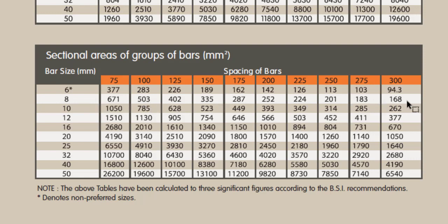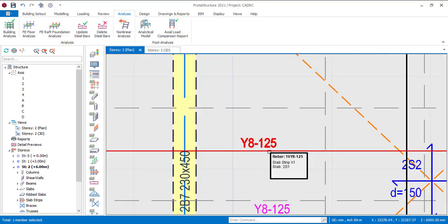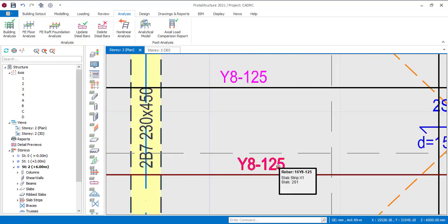That means if I am using Y8, the spacing I'm expecting it to provide is 125 mm. So it should be providing Y8 at 125 mm spacing. If it provides this, it is accurately designed. If it provides higher spacing, it is underdesigning. If it provides lesser spacing, it is overdesigning. The accurate design should be 125 mm spacing. Now let's check — we can see Y8 at 125 mm spacing. That is very accurate. No overdesigning, no underdesigning. This is accurate.